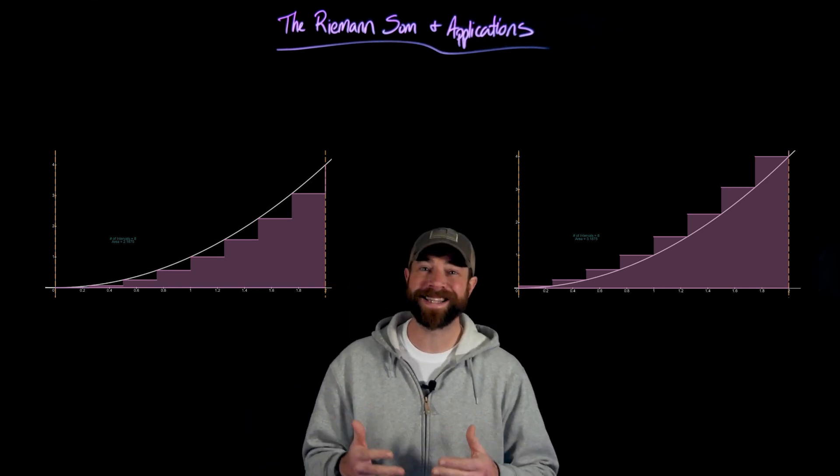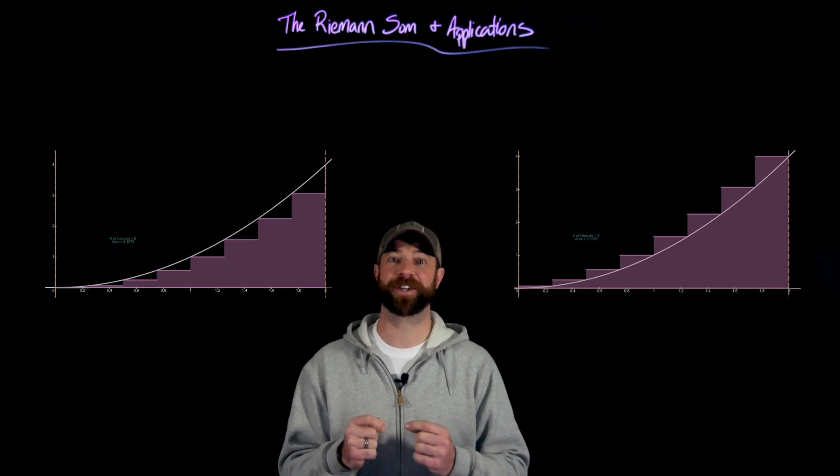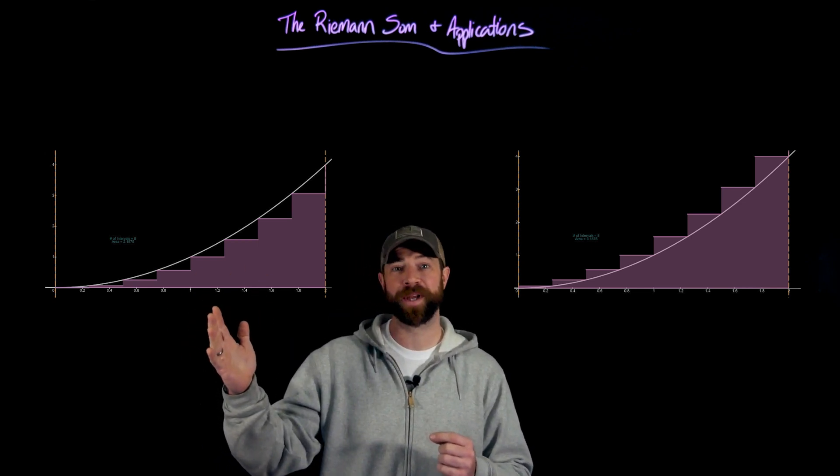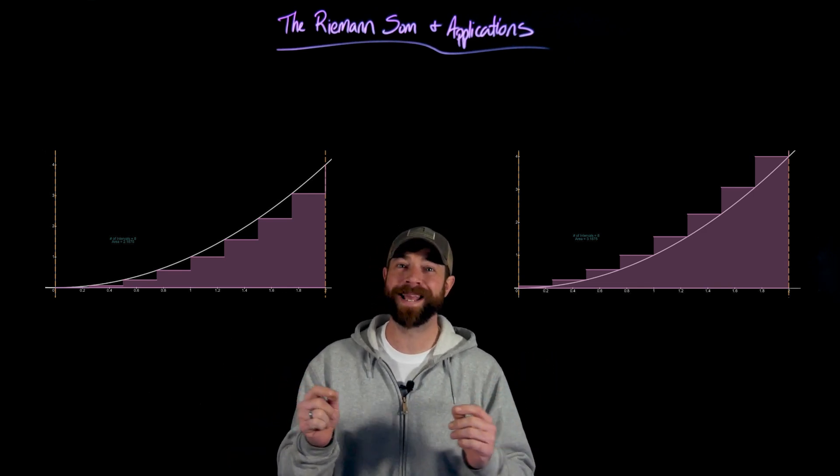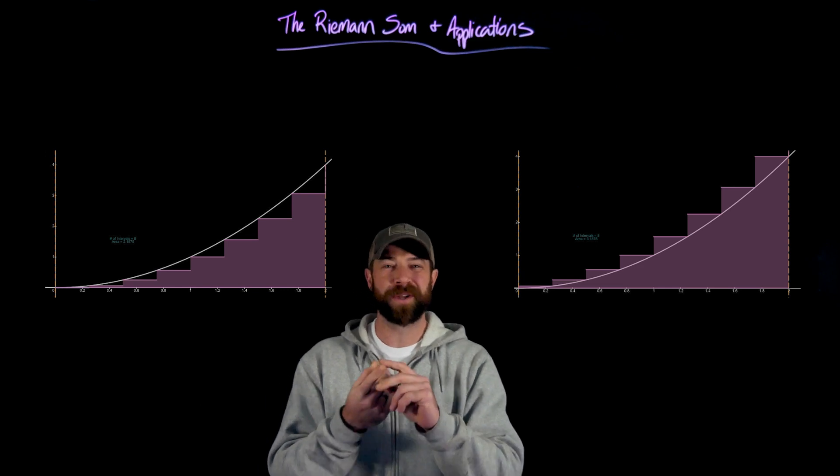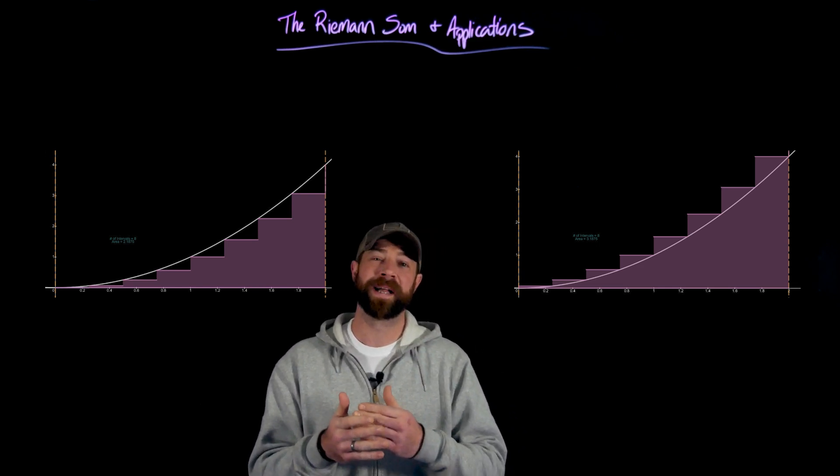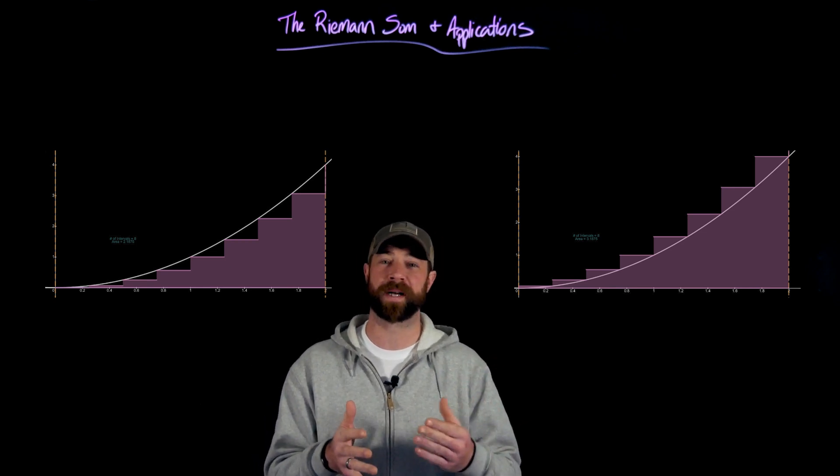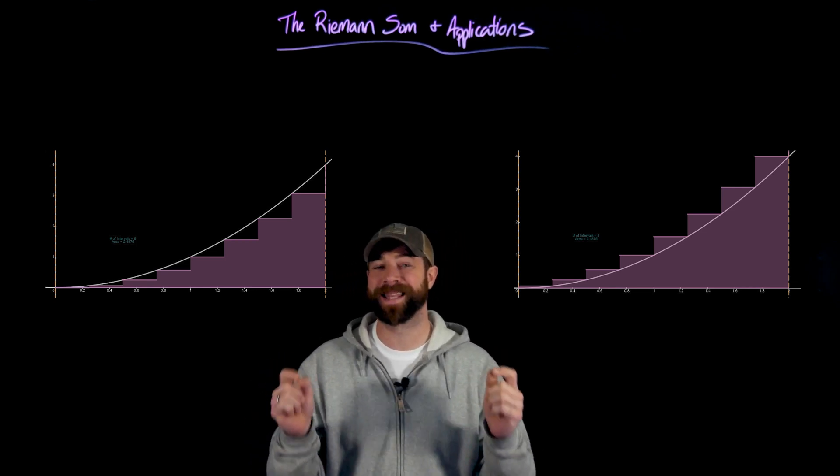All right, welcome back. We've set the table now for finding the area, the specific area under a curve. We have the left endpoint approximations and the right endpoint approximations. By the way, these weren't the only two types of approximations that we could have used. There's midpoint approximations, which takes the midpoint of intervals, and there's also trapezoidal approximations. The important thing is actually simply this.